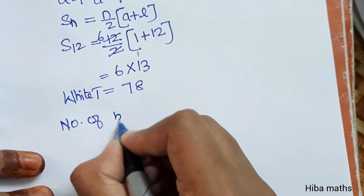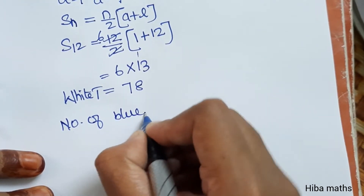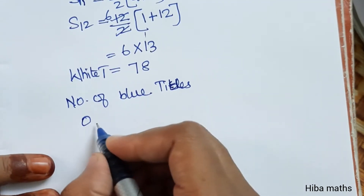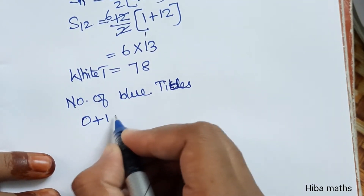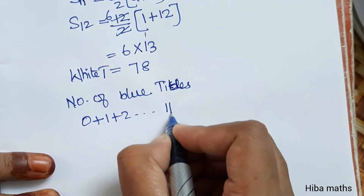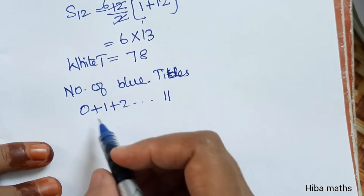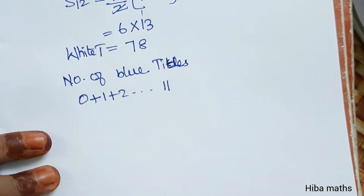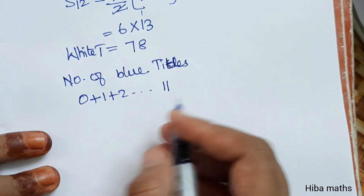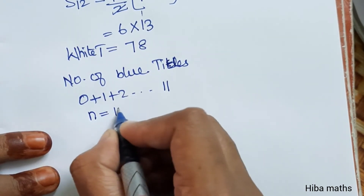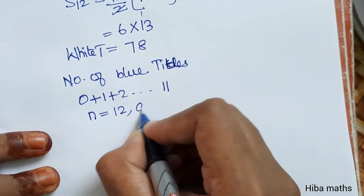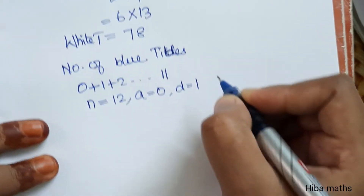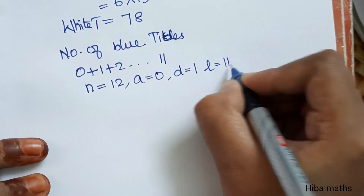Number of blue tiles: the blue tiles start from 0, then 1, 2, up to 11. Because n is 12, l is 11, so the last value is 11. Therefore, a is 0, d is 1, and l is 11.